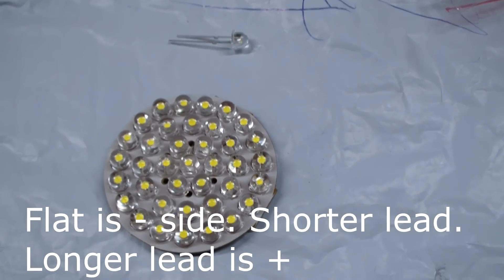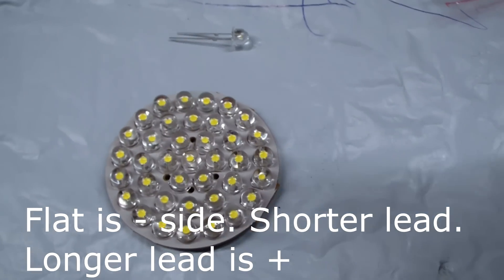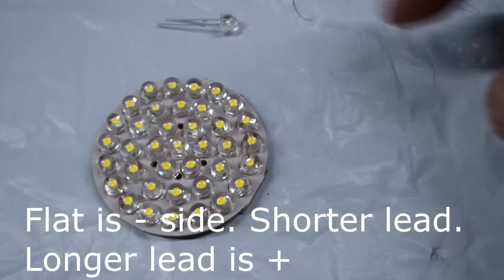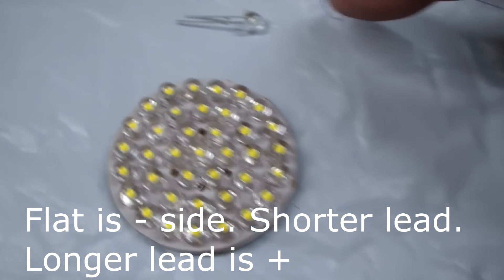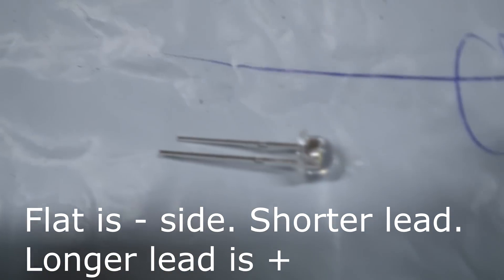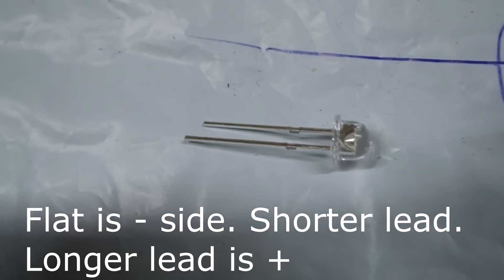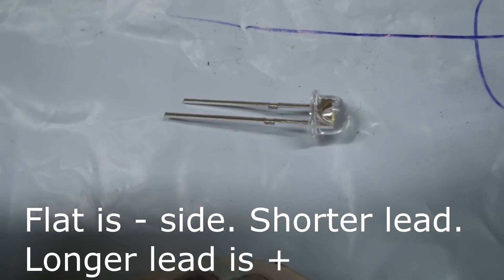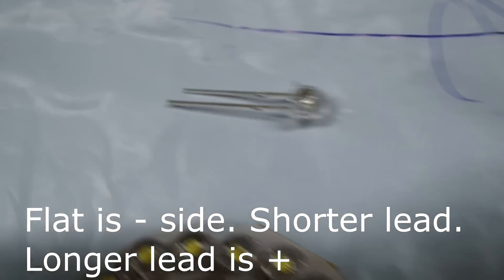I soldered all the LEDs in, and they gave me one extra. It's real easy to do. Just remember, you see there's one lead that's longer than the other. The longer one is the plus, and the shorter one is the minus, and the minus has the flat side on the edge.